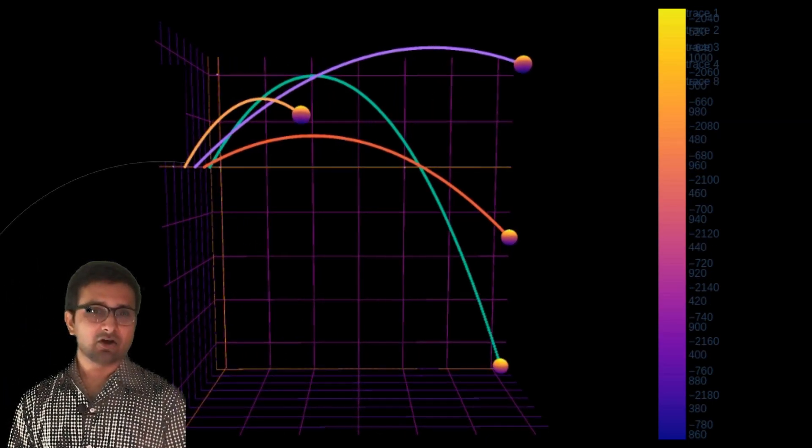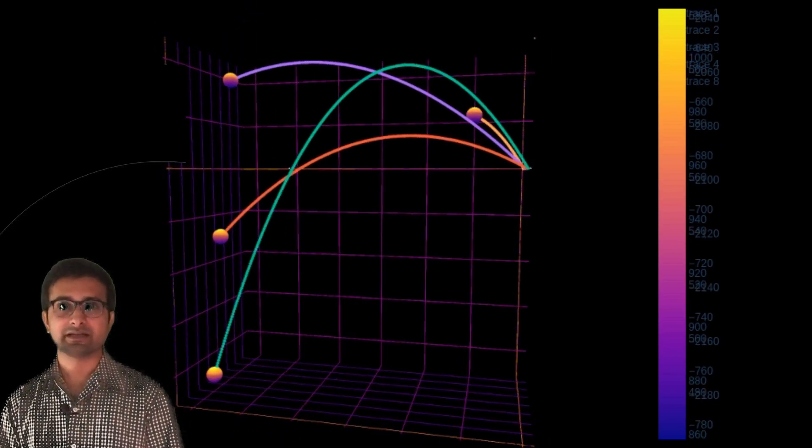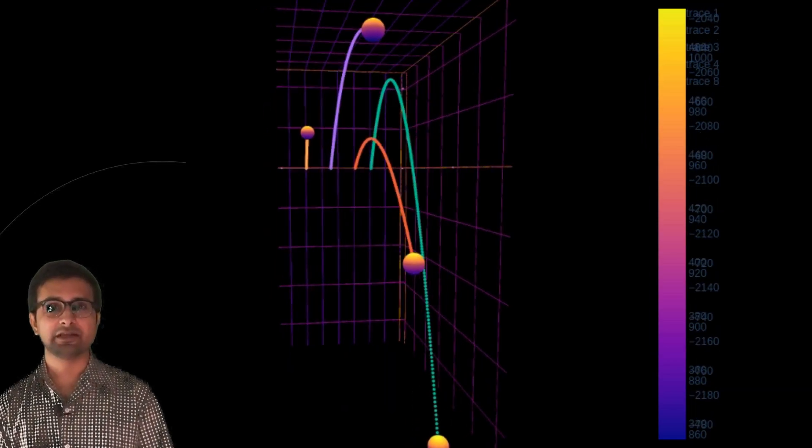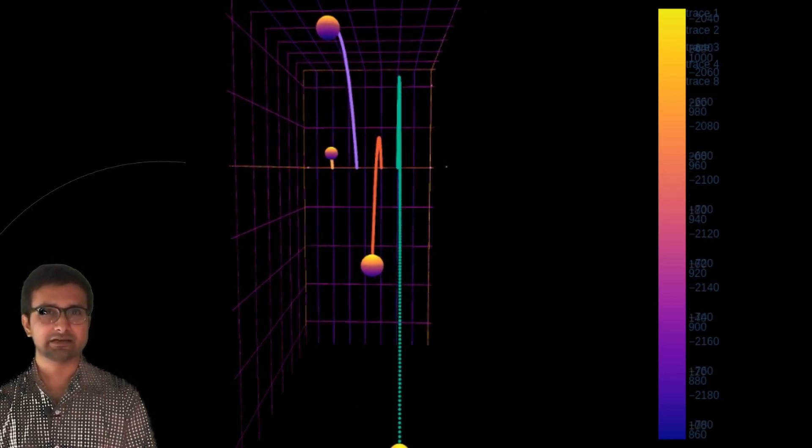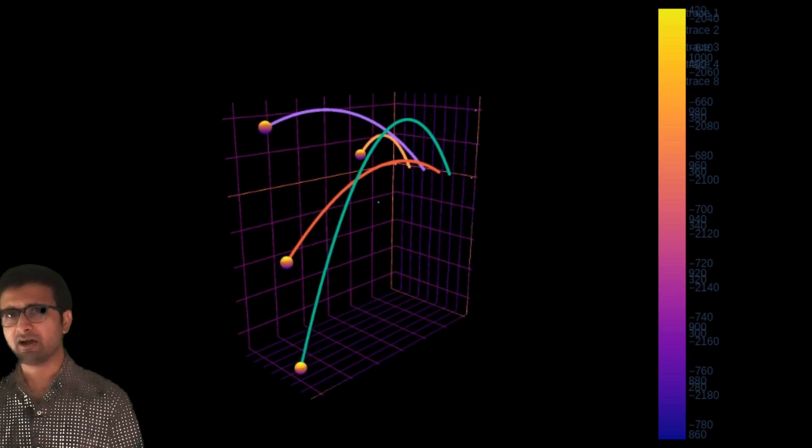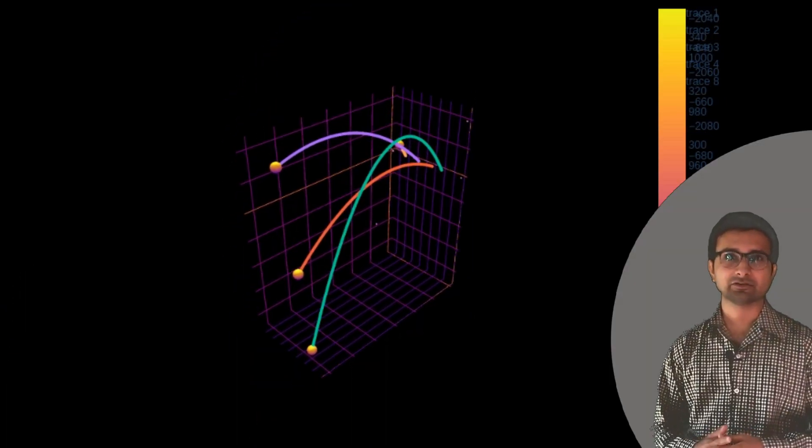And in our final or fourth simulation, we are going to reduce the velocity by a substantial amount to 10 meters per second and putting the angle at 60 degrees. And you can see that it is going way below to the origin.